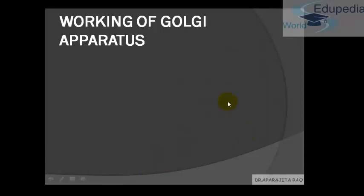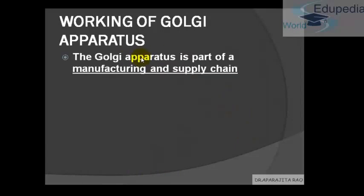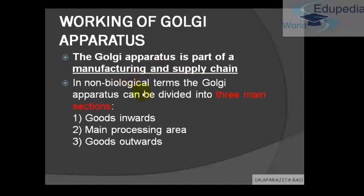Starting with the working of the Golgi apparatus: the Golgi apparatus is a part of a manufacturing and supply chain — it manufactures and it supplies. In non-biological terms, the working is divided into three parts: first is goods inward, that is the entry gate; second is the main processing area, where the main work is done; and third is goods outward, that is the exit gate.